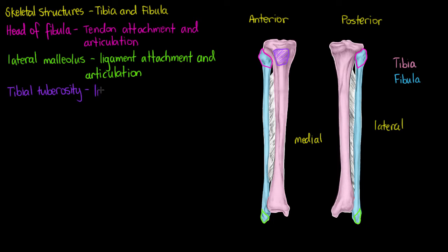The tibial tuberosity is a roughened elevation of the bone on the superior portion of the anterior surface, and it's going to be a point where our patellar ligament attaches inferiorly — so below our knee is where the patellar ligament attaches to our tibia.